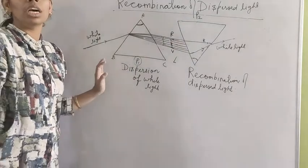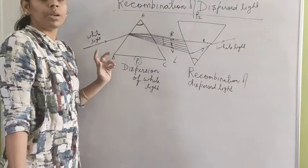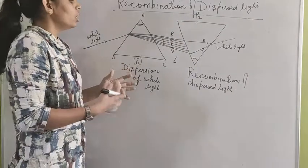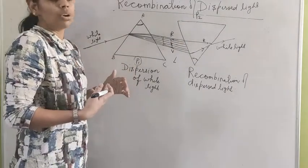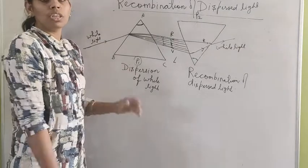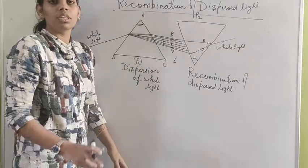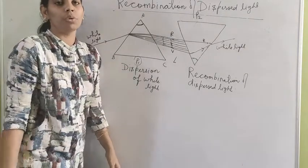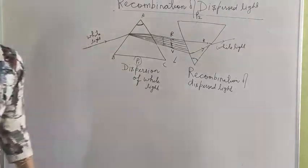I hope you have understood the concept of recombination of dispersed light. In the next video we will cover the topic of the rainbow, as this video is getting longer. Thank you.